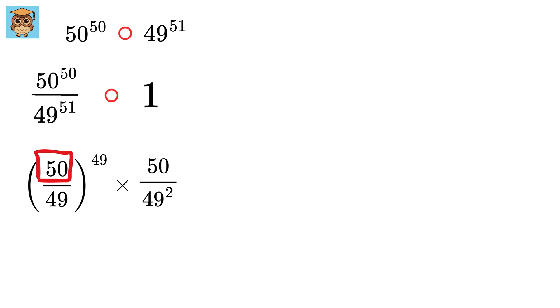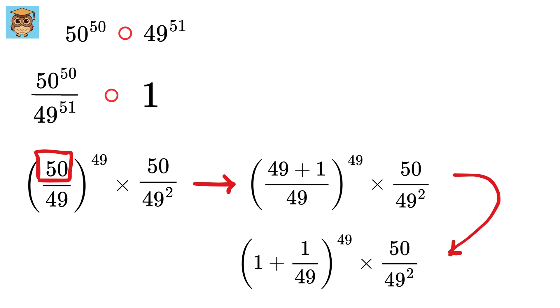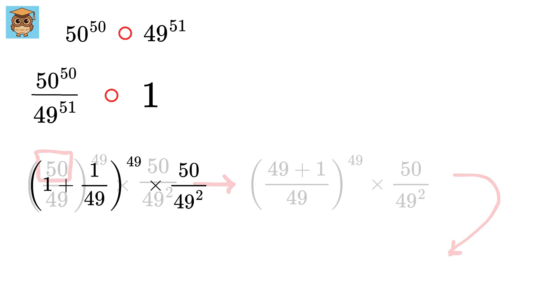Great! Now we can write this 50 as 49 plus 1. So this thing inside the bracket becomes 1 plus 1 upon 49, and then we have whole raised to 49, and this times 50 by 49 square. Awesome!